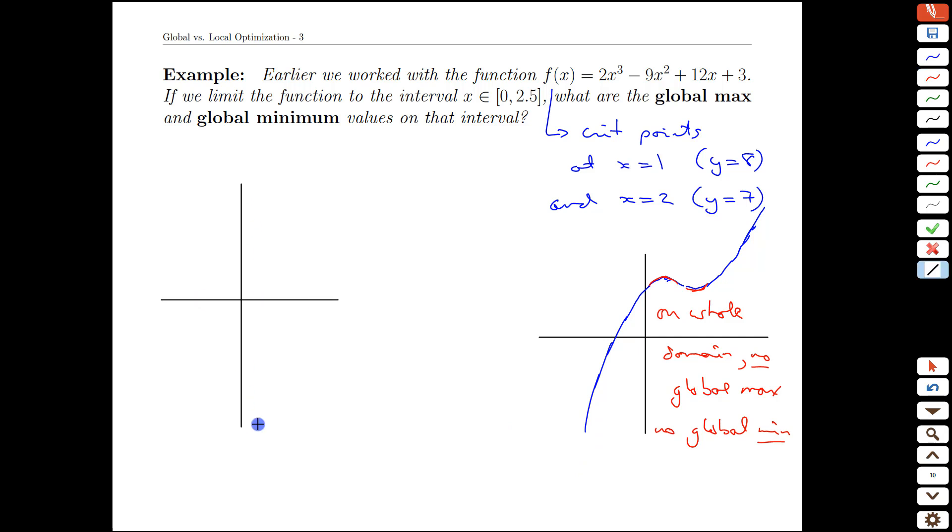So how can we make this interesting from a global maxima perspective? If we limit the domain, all of a sudden things get more interesting. We know our critical points occur at x equals 1 and x equals 2. If we enforce an artificial boundary on that function and limit ourselves to the study of x equals 0 up to x equals 2.5, then we know a few things like the height of the two critical points.